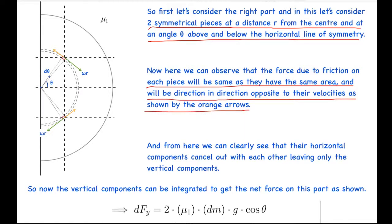So the velocities of these pieces will be omega r in the tangential direction and so the friction force will be opposite to this velocity and is shown by these yellow or orange arrows. And from here we can clearly see that their horizontal components cancel out with each other leaving only the vertical components.